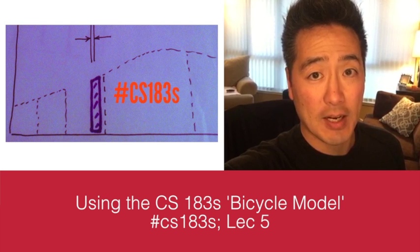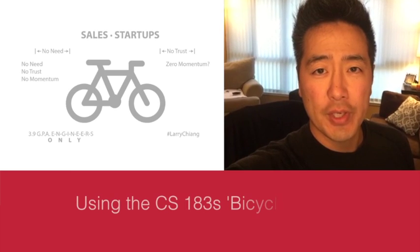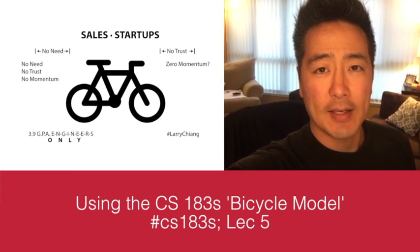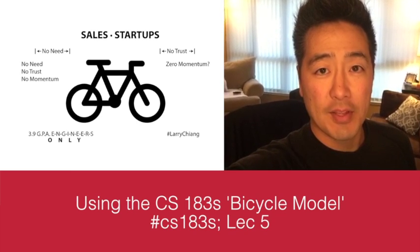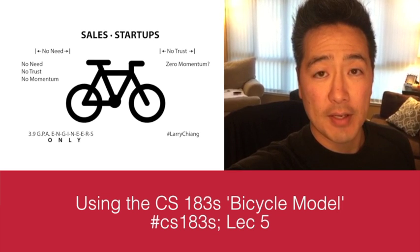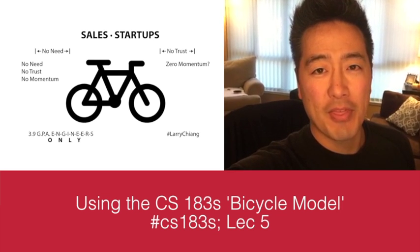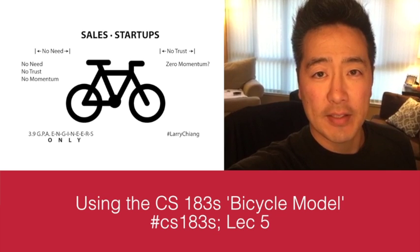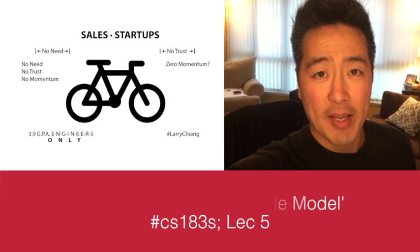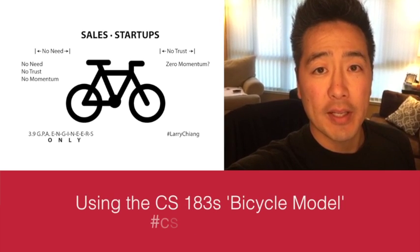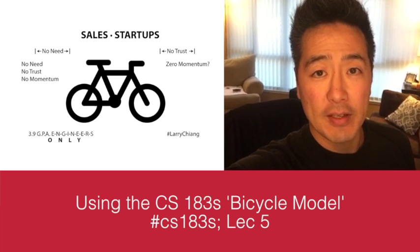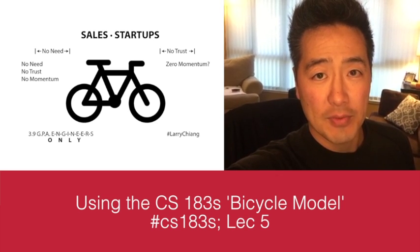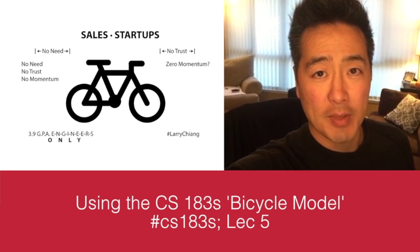We're selling something that we did not ourselves code. The whole no need, no trust is theoretical — maybe theorem-etical — where it's exemplified by a bicycle. On the rear wheel it's no need; the front wheel is no trust. That's what that bicycle model is.